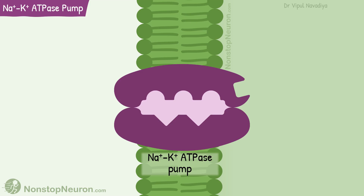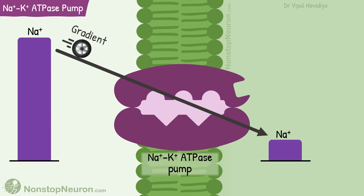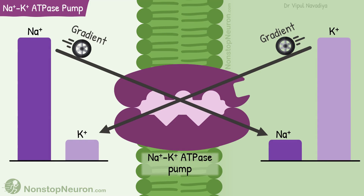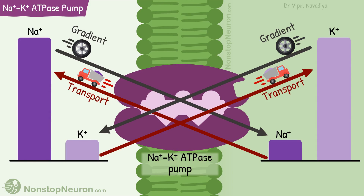The sodium potassium pump carries out the active transport of sodium and potassium. The sodium concentration is higher outside than inside, so the gradient is from outside to inside. Potassium concentration is higher inside than outside, so for potassium, the gradient is from inside to outside. The sodium potassium ATPase pump moves sodium and potassium against their respective gradients — it transports sodium from inside to outside against its electrochemical gradient, and potassium from outside to inside.